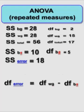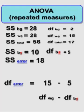And the degrees of freedom for the error is the degrees of freedom for the within-group minus the degrees of freedom from the between-subject group, what we just calculated. So let's just plug and chug, and it looks like the degrees of freedom for the error is 10.